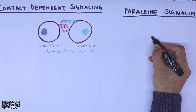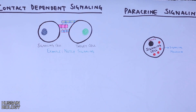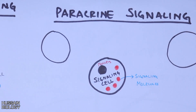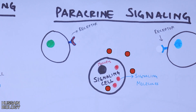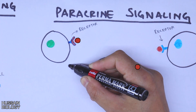Second is paracrine signaling. Here we see the signaling cell with signaling molecules shown in red. Nearby, in close proximity, are a few other cells with receptors as shown in the diagram. The signaling occurs when the signaling molecules are secreted by the signaling cell, and then these signaling molecules are received by target cells in close proximity via receptors, as shown in the animation.